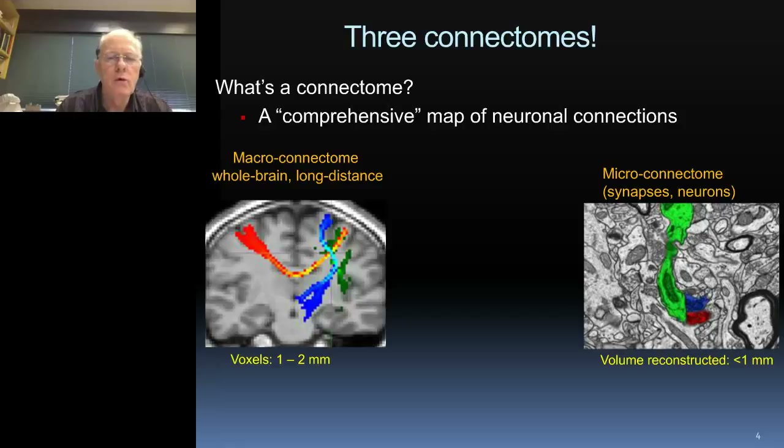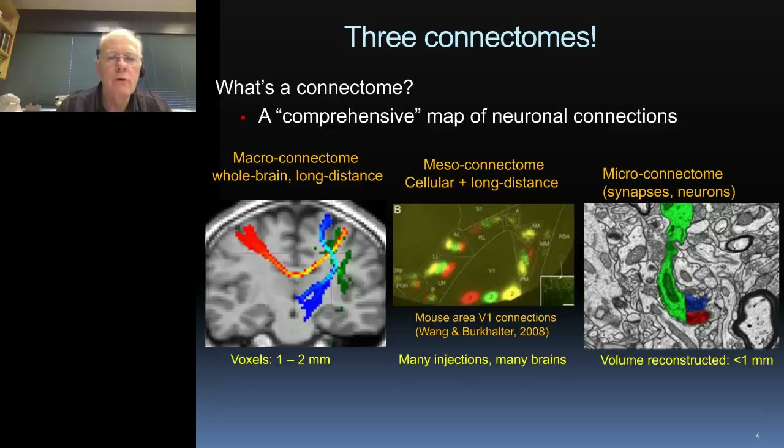The micro connectome aspires to understand brain circuits at literally a microscopic level — to study every synapse, neuron, dendrite, and glial cell — but can only do that up to a small fraction of a cubic millimeter. There's also a world of meso connectomics in which tracer methods are used in laboratory animals to study local and long-distance connections.